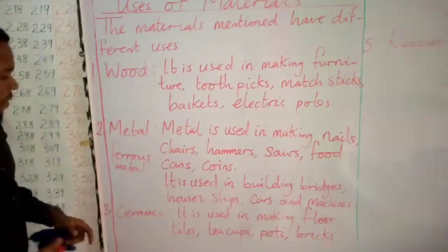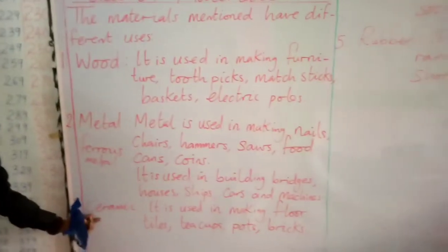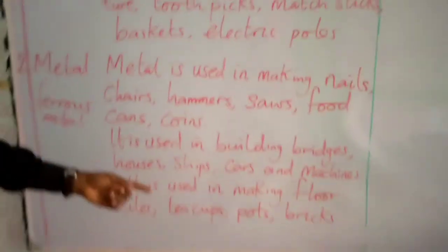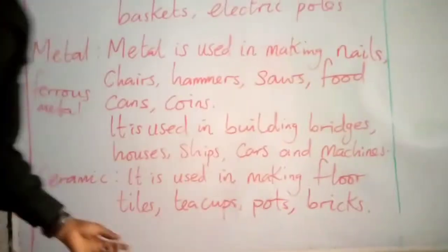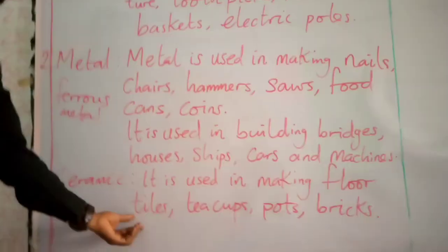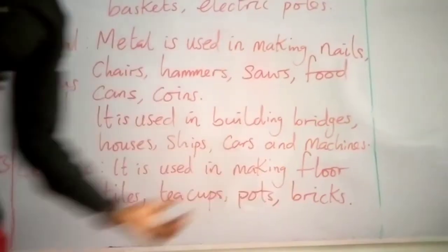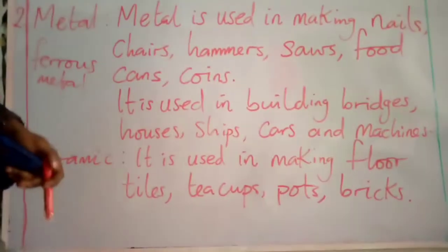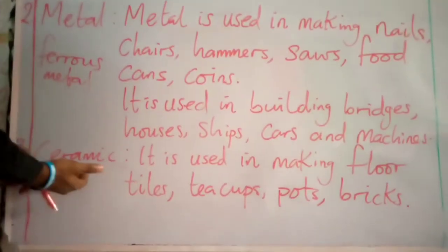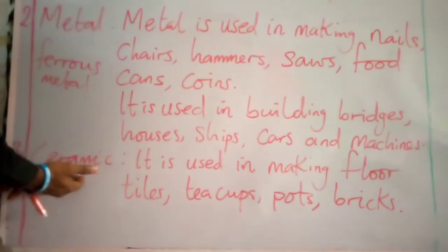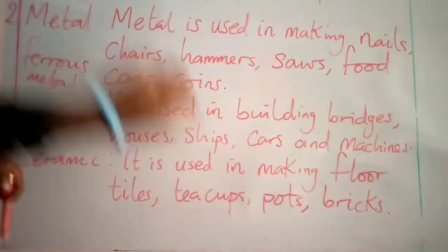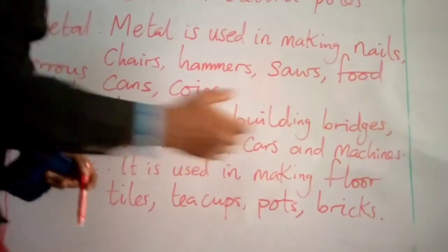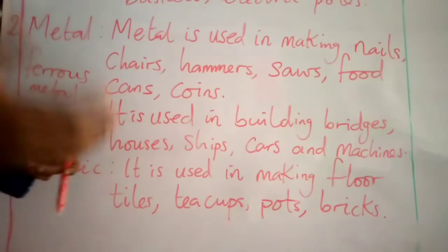Number three: ceramic. Ceramic is used in the making of floor tiles. When you go home you see your floor — it's made of tiles, and this is gotten from ceramic. We also have teacups, ceramic pots, bricks, and even flower vases — all gotten from ceramic material.